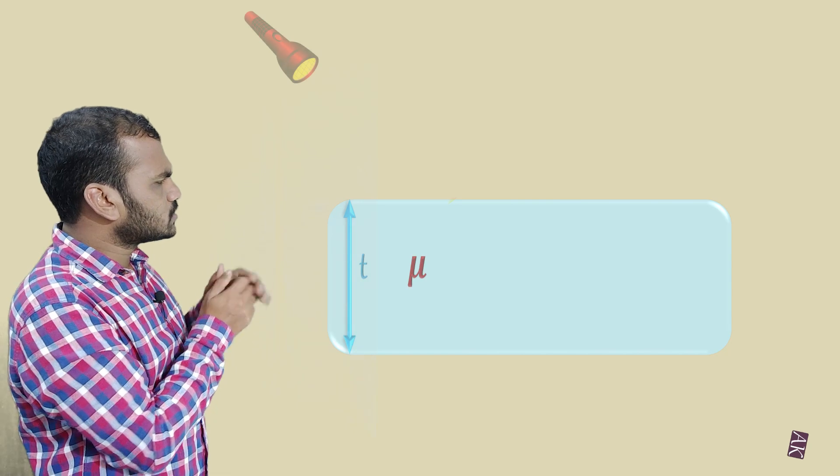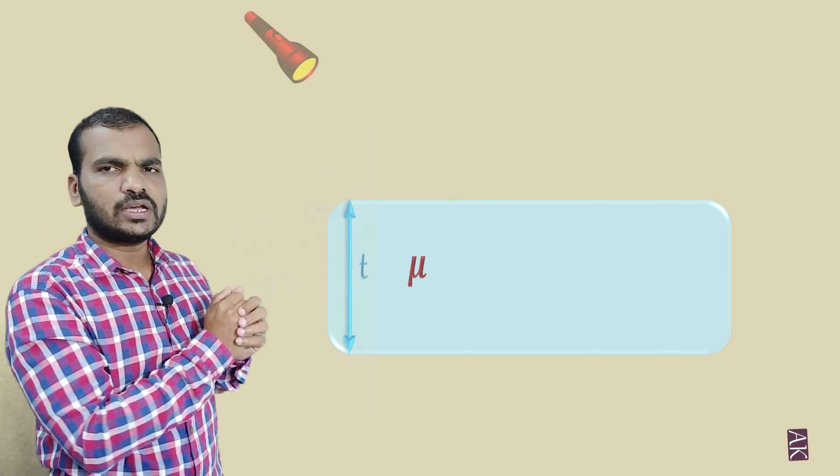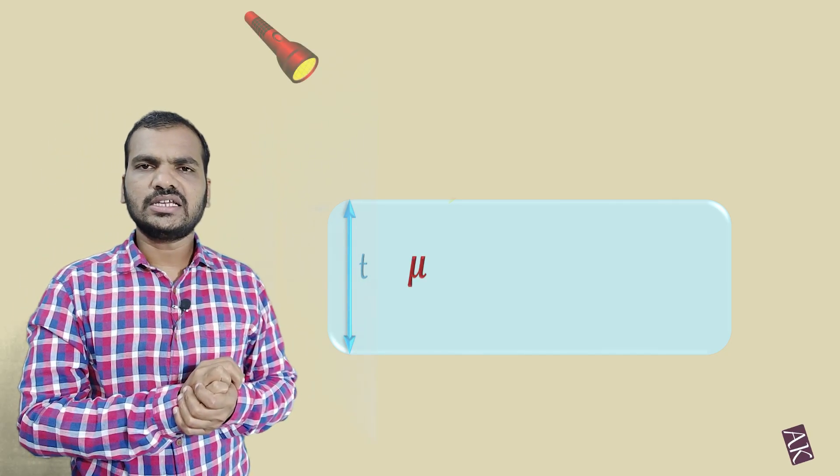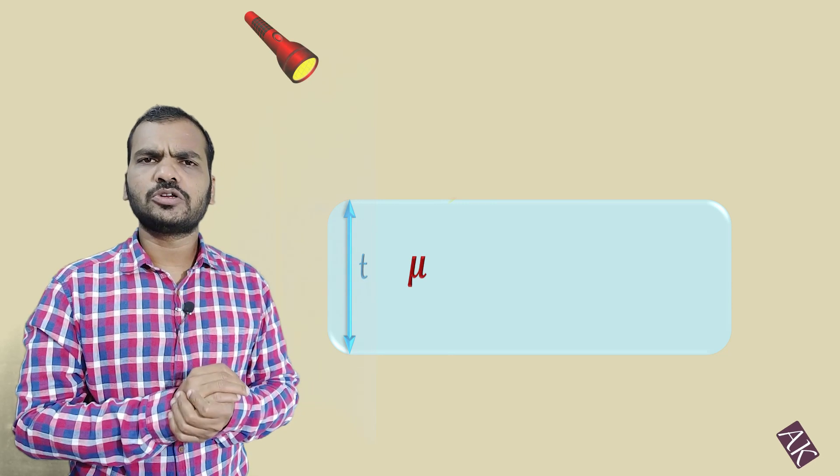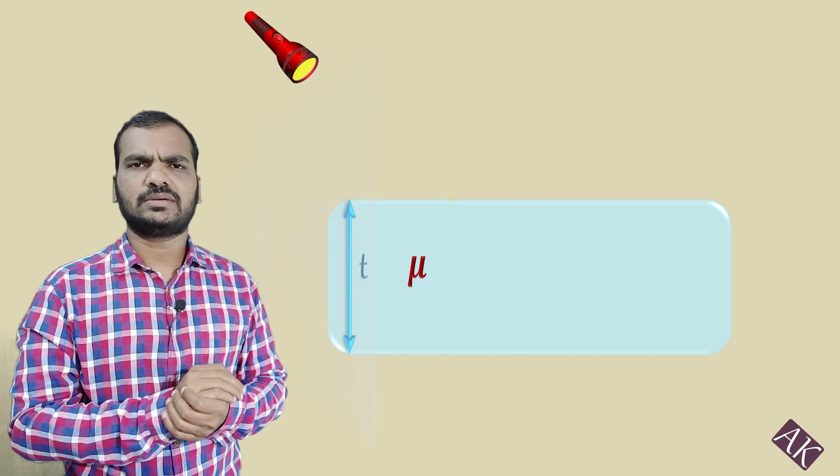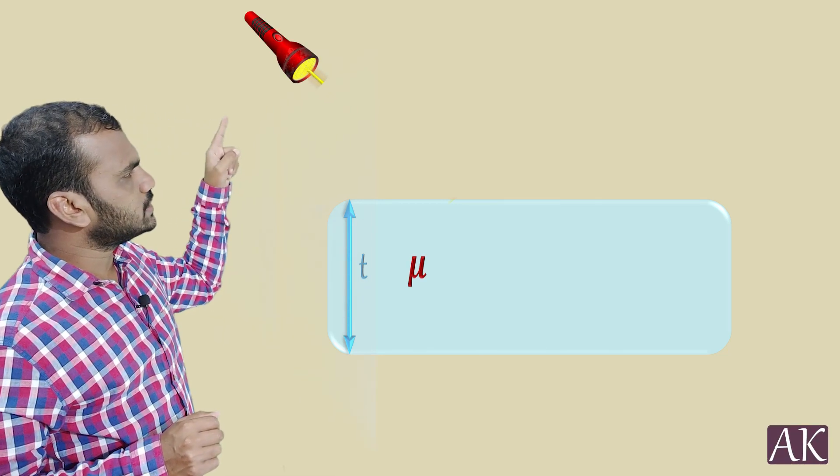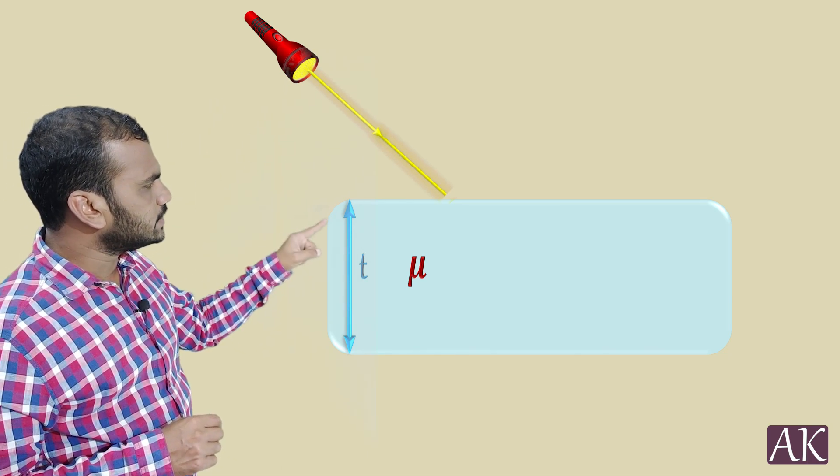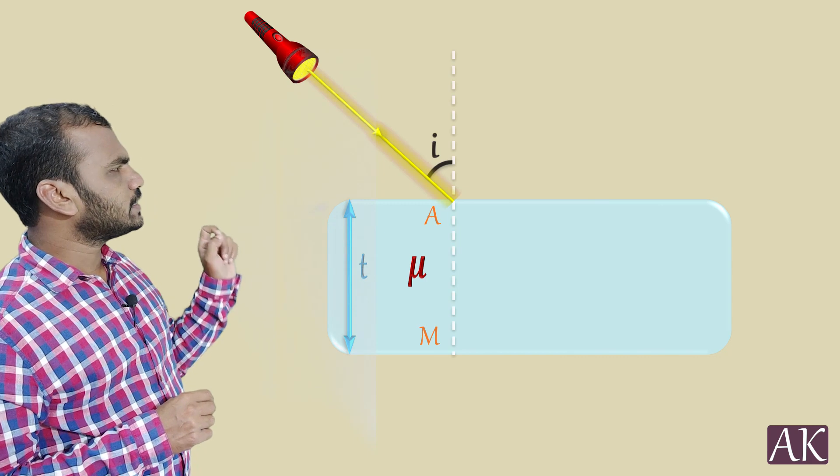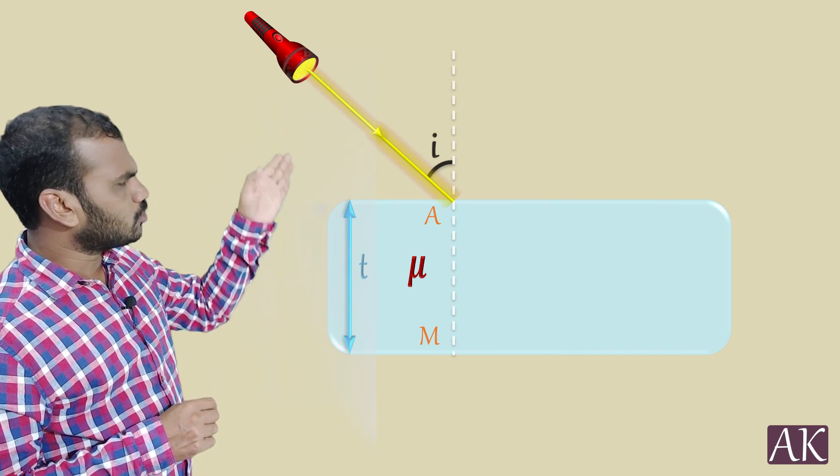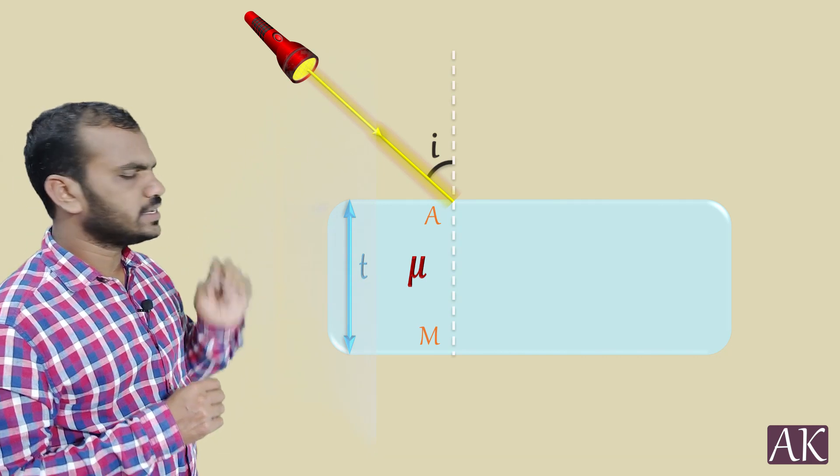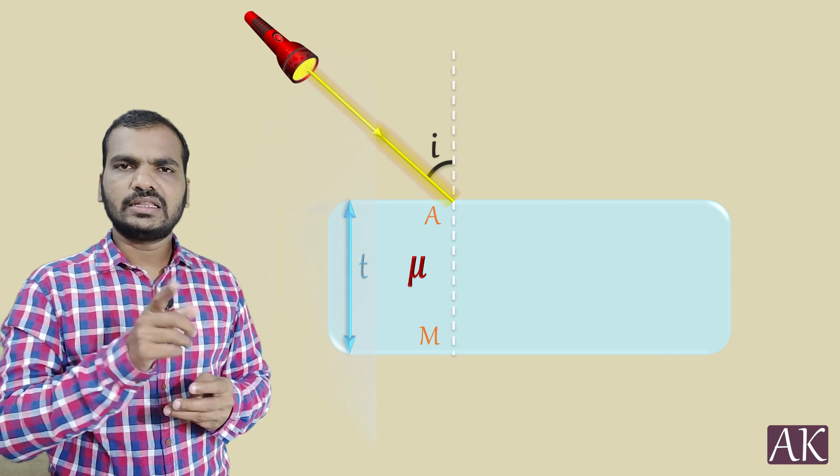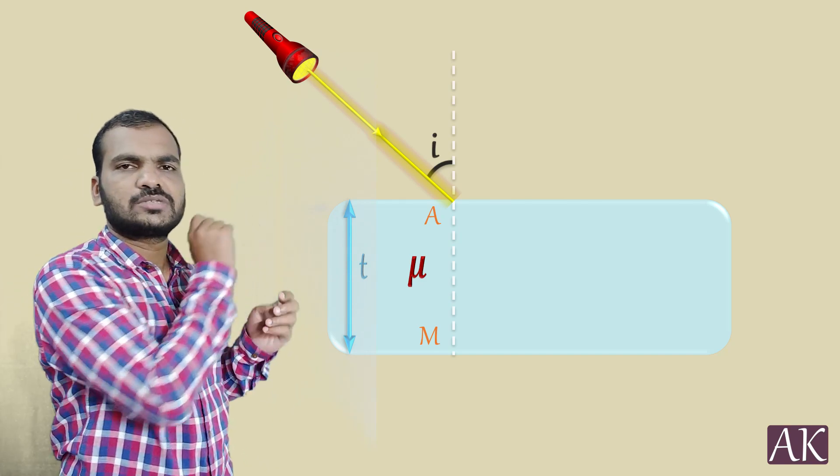The glass slab has thickness t. Refractive index is going to be mu for this particular glass slab. Now a torchlight is focusing a light ray onto it and as the light ray is incidenting at point A, you can clearly see that we take a normal first. So it is incidenting at A, take a normal and this makes an angle I with respect to that normal.